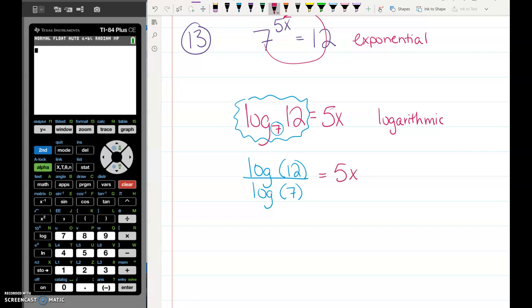So we do that in our calculator. Log button 12, close your parentheses, divided by log button 7, close your parentheses. We get a decimal. It is 1.277 equals 5x. And now to finish solving this, we just get that x by itself. So divide both sides by 5. That will give you your decimal. That is what x equals.